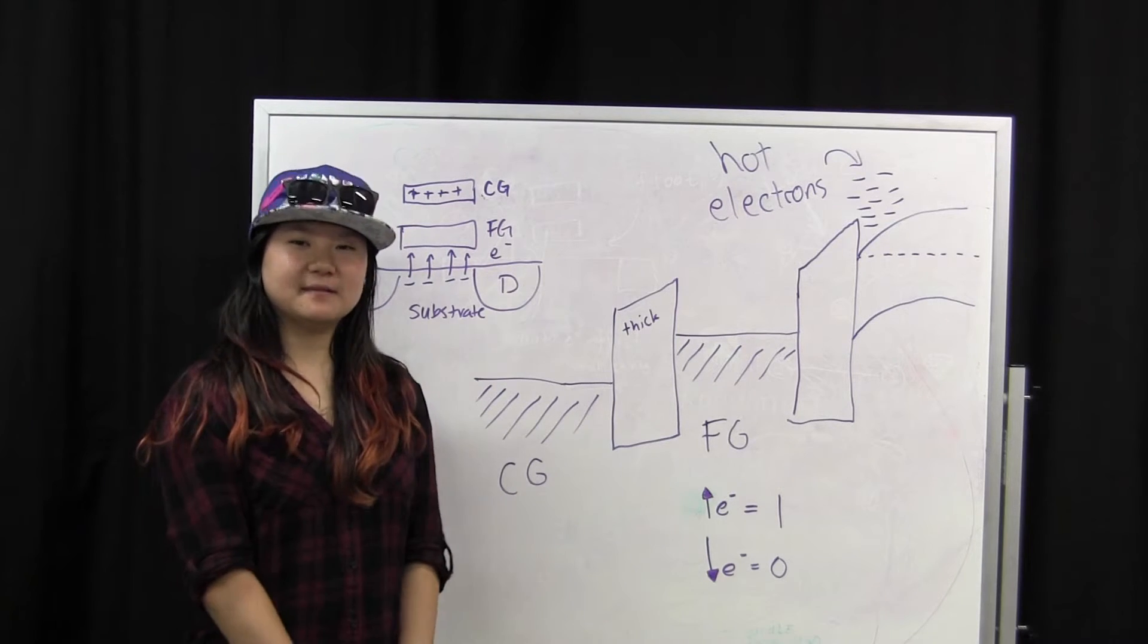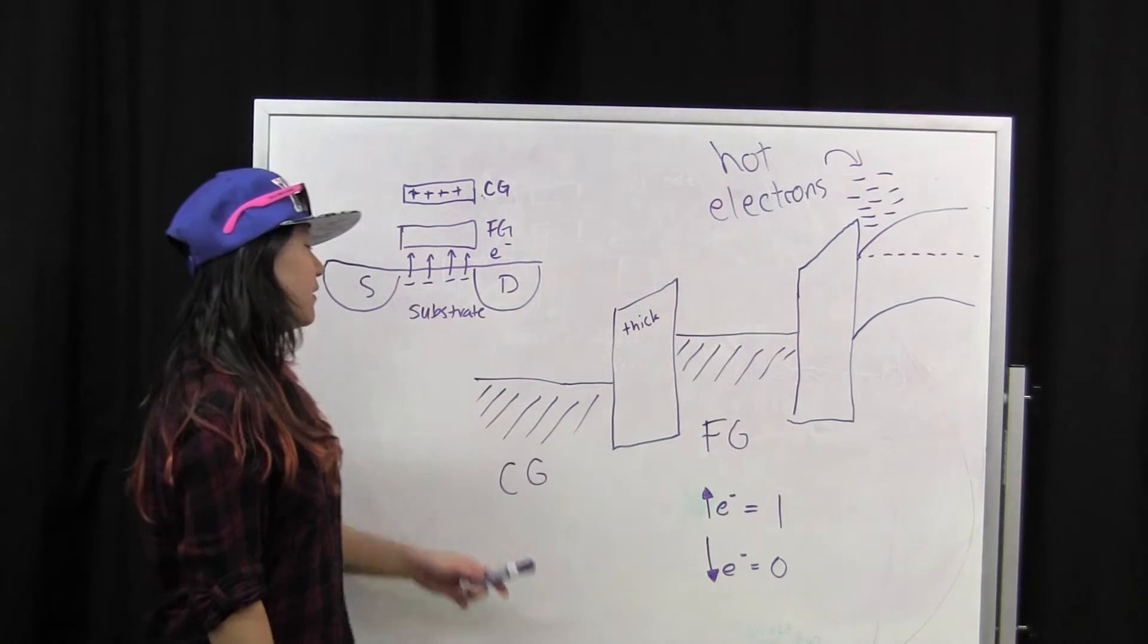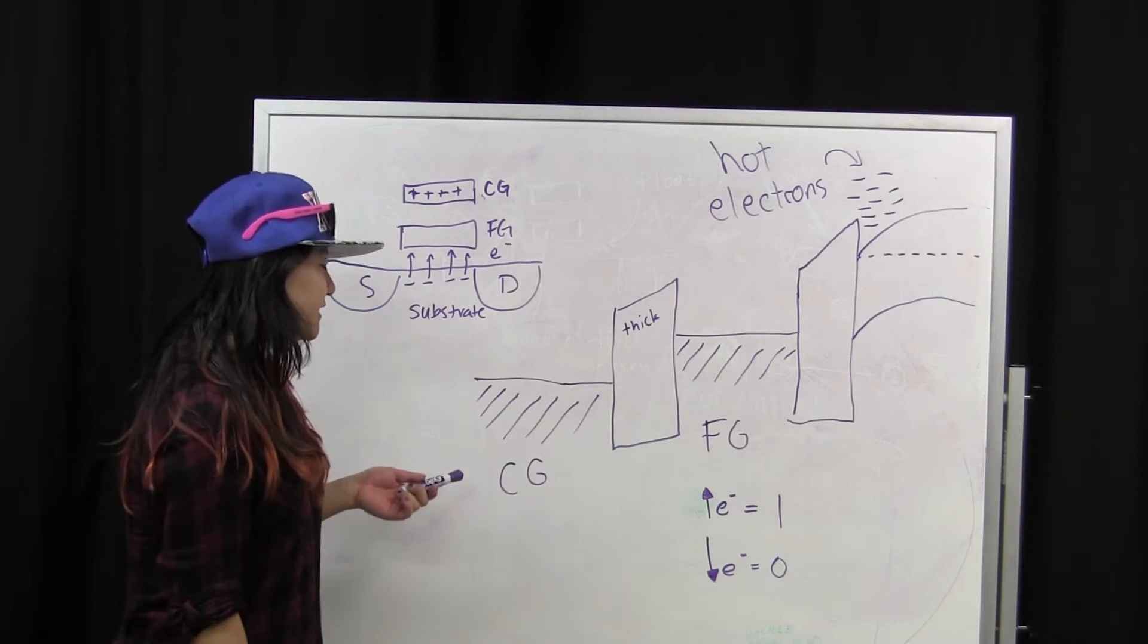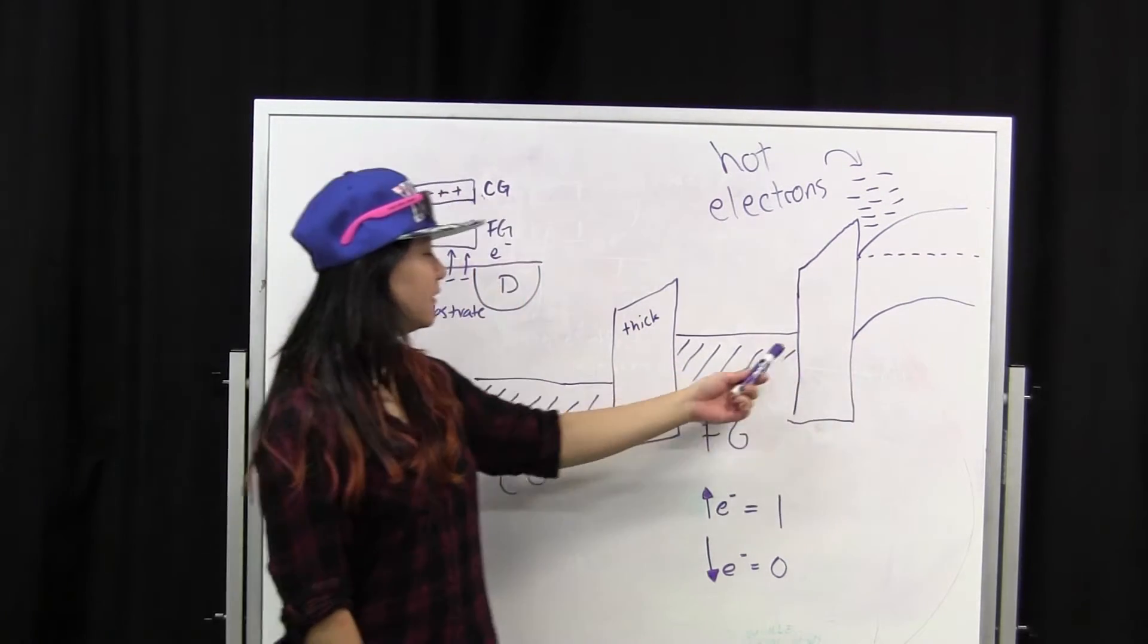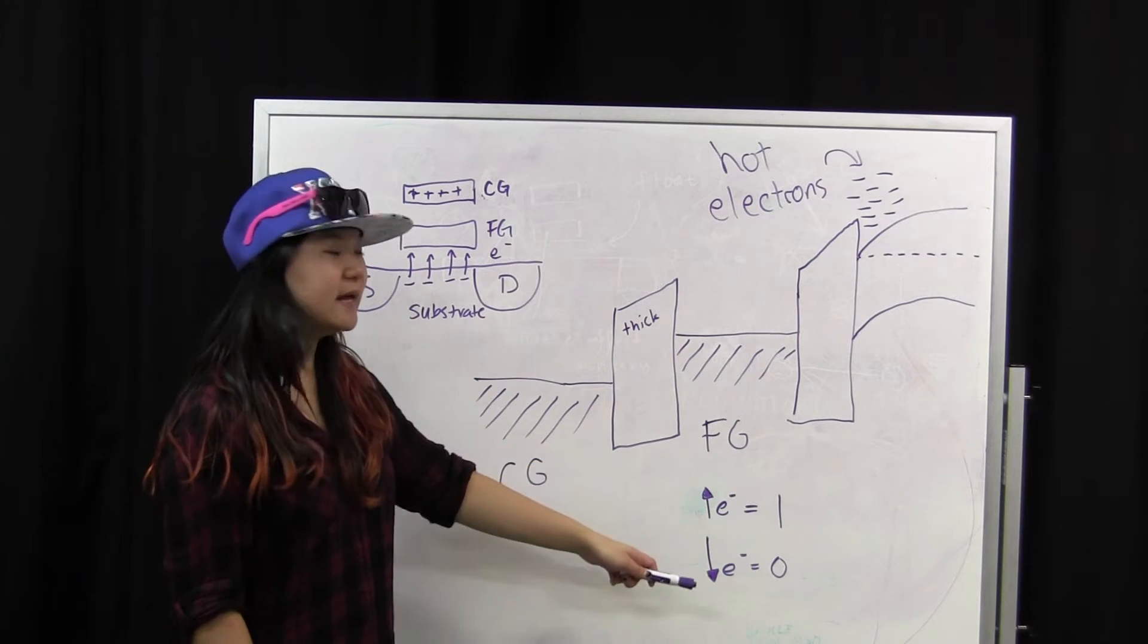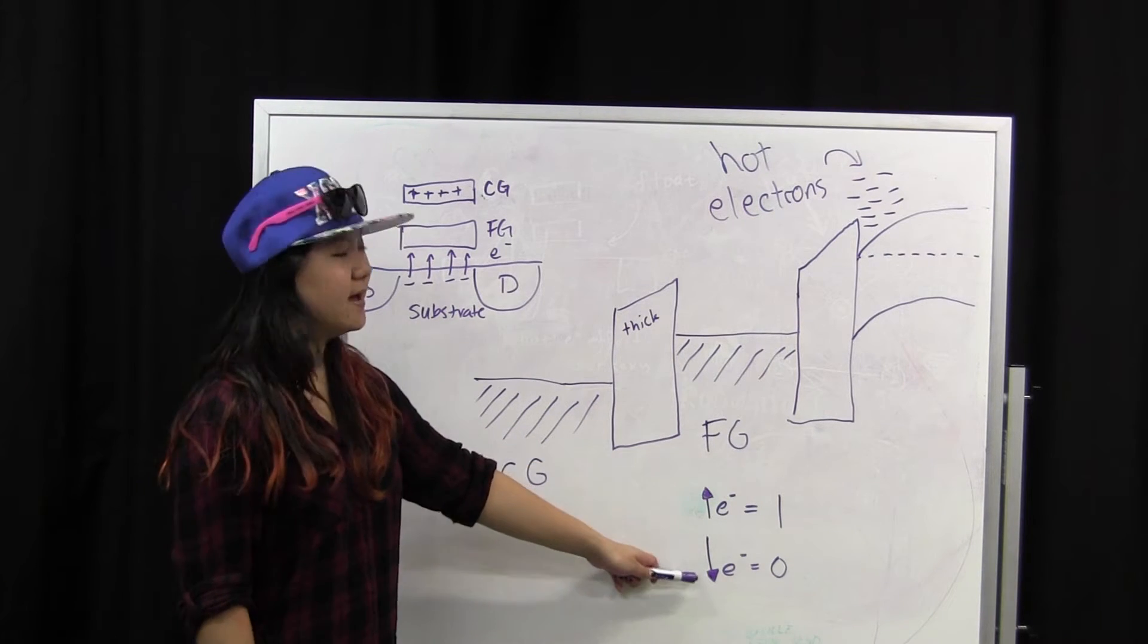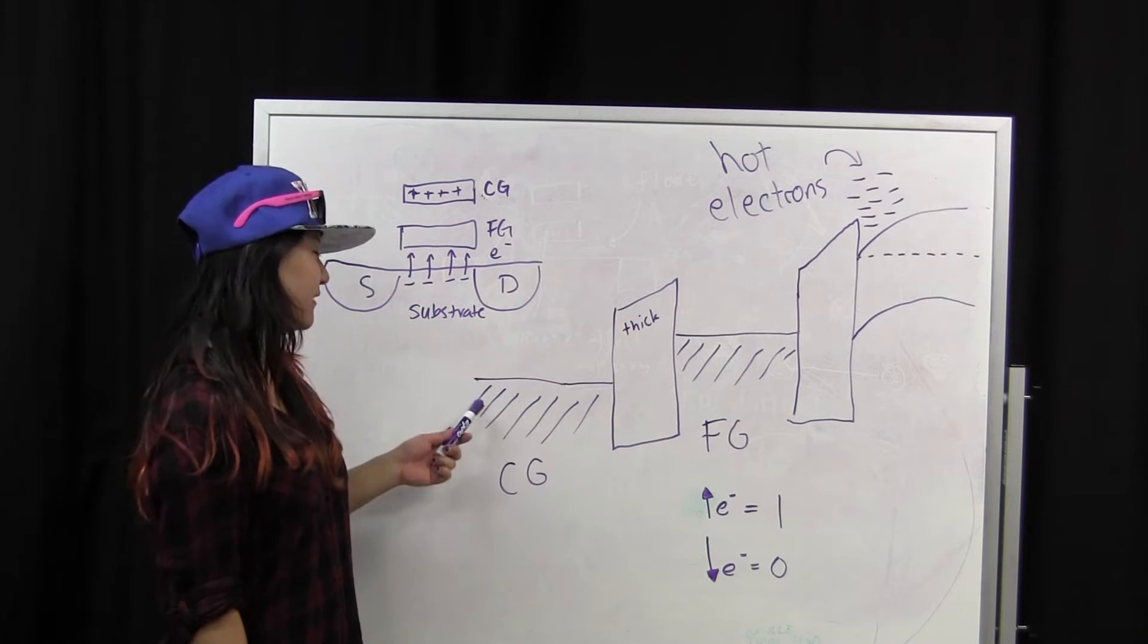Flash memory works through a relatively simple process. It takes advantage of the hot electron effect. When you apply a large positive voltage to the control gate, electrons from your substrate will tunnel into your floating gate. More electrons mean a 1 stored into your bit, less electrons means a 0. How do we get less electrons you might ask? Just apply a large negative voltage back to the control gate.